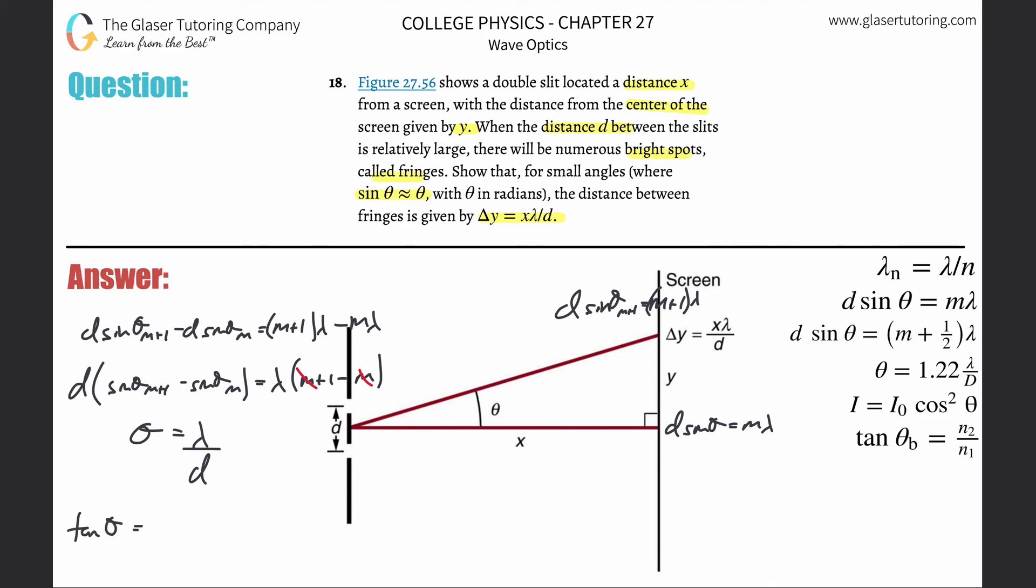But now if tan θ, if we're assuming this is really small, the tan θ is basically going to be very close to just basically just θ. So in essence, θ here is going to be equal to y over x.